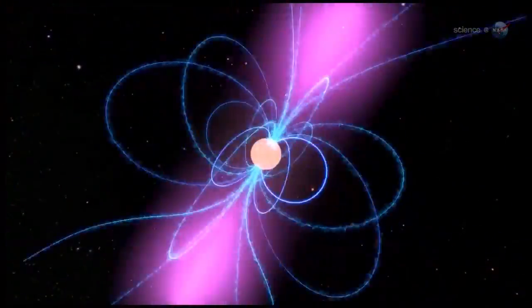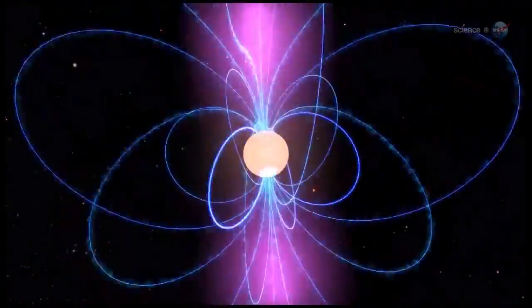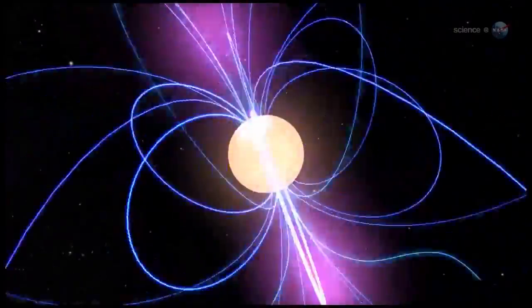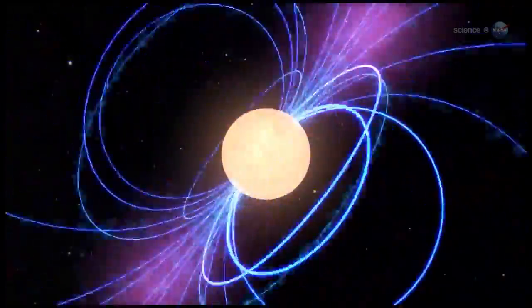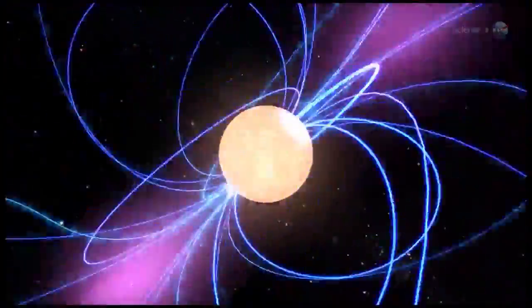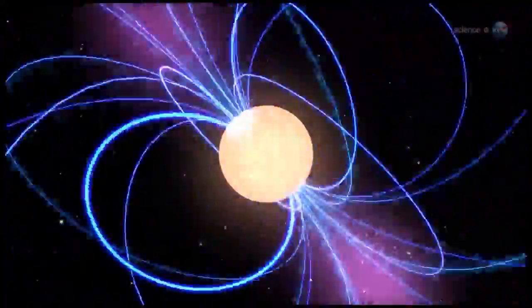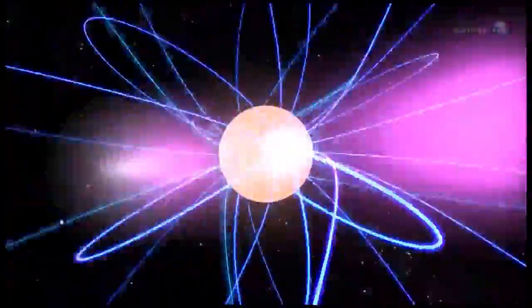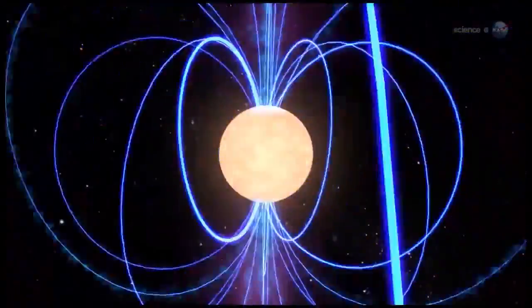Pulsars are strongly magnetized neutron stars formed in the aftermath of supernova explosions. They can spin on their axis thousands of times a second, flinging particles into space with fantastic energies that accelerators on Earth can't match. Among these particles are pairs of electrons and positrons.